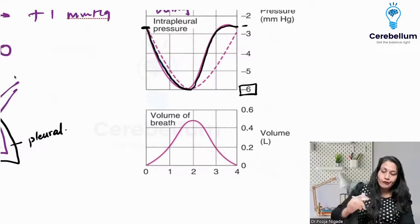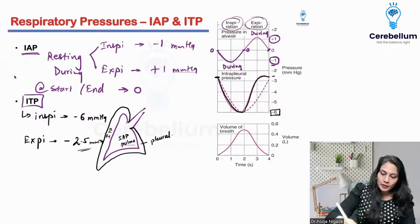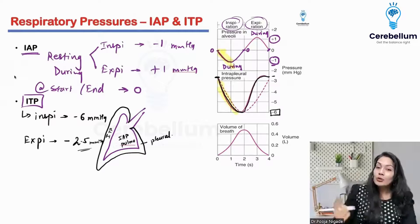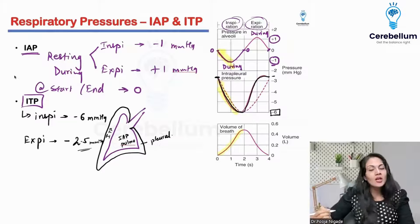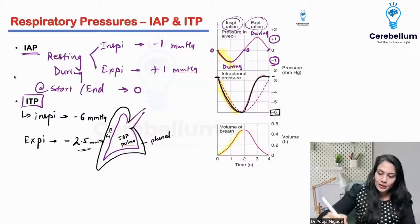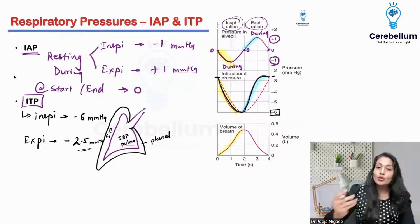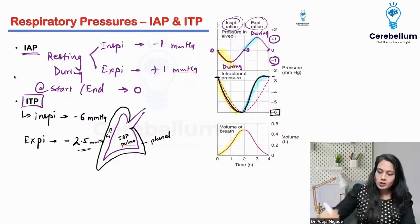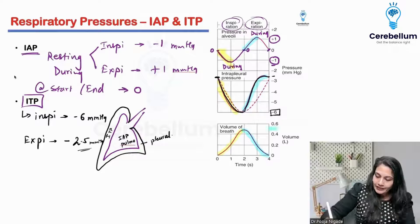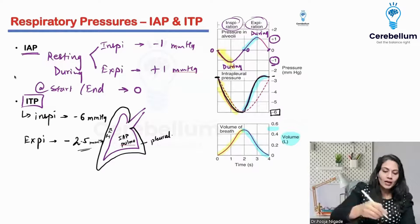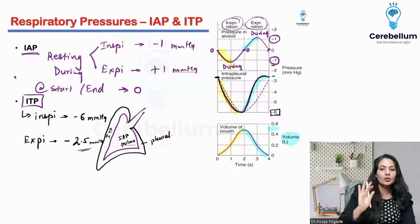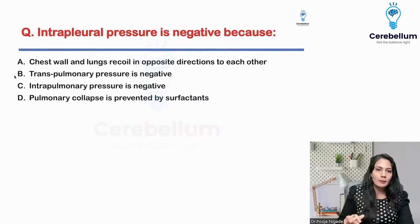This graph also shows volume. When pressure decreases, by Boyle's law, volume should increase — and that is exactly what happens here. When pressure increases, volume decreases. The volume shown is 0.5 liters, which is the tidal volume, because during quiet respiration we talk about tidal volume.